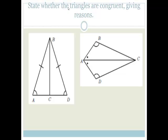It says state whether the triangles are congruent and give reasons. We've got triangle ABC and triangle DBC. They've given us that AB is equal to BD, that angle A is equal to angle D, and we have a common side BC. So what would we say? This would be angle, side, side.